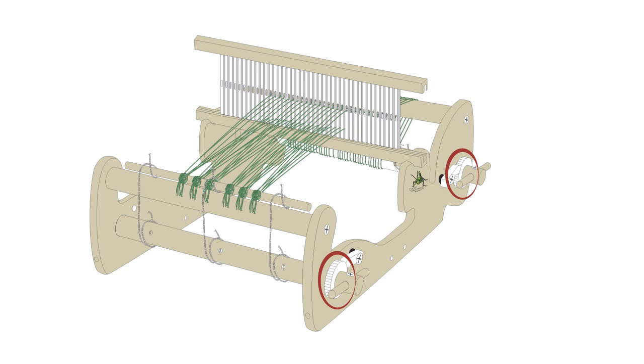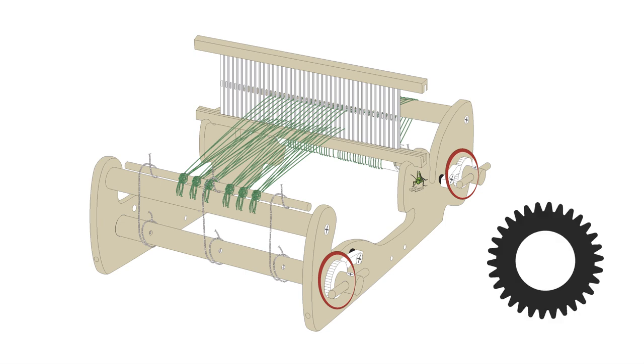The secret why the shacked rigid heddle looms, such as the flip and the cricket, tension is so adjustable is in the ratchet gear. You can see that the spacing between each of the teeth is very close together. This allows you to micromanage the tension, making the use of hand spun a lot less scary.